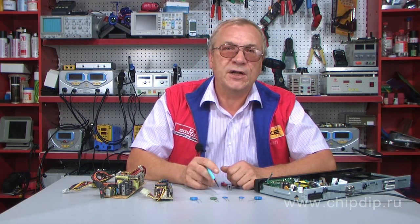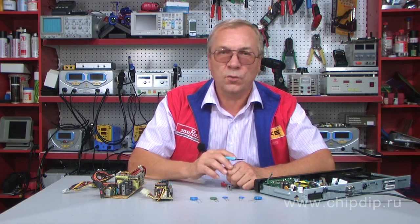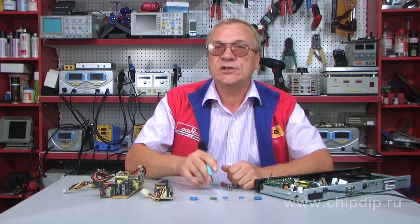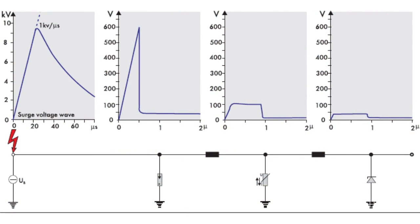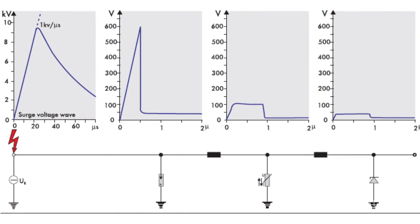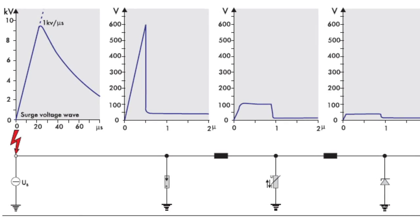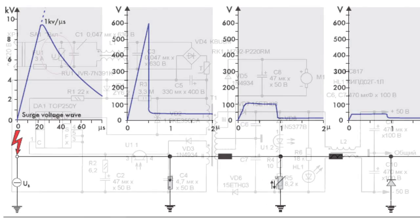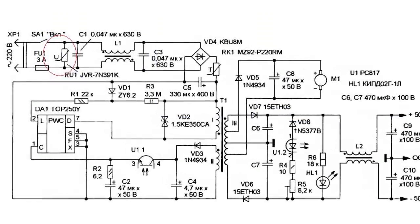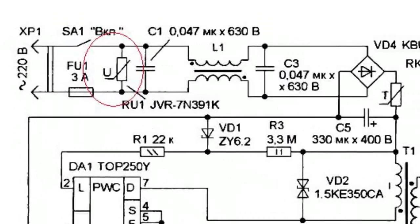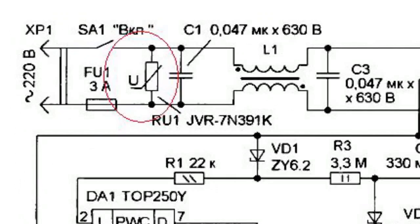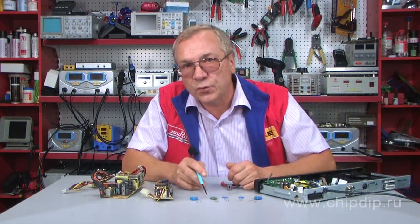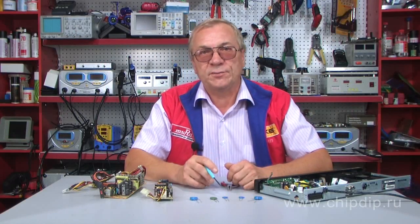Electro-parameters of the varistors are determined by the major bulk resistance and the capacitance, which alter significantly due to alterations in voltage and temperature. When the voltage of the varistor is high and higher voltage currents are passing through it, the current density in pin contacts is also high. Heating of the pin contacts decreases resistance, and as a result the current-voltage diagram is non-linear.